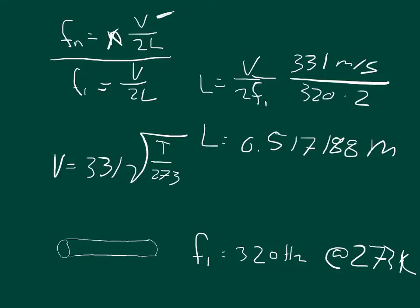So our new velocity should equal 348.7129 meters per second, and we can just plug that in up here on our fundamental frequency equation for an open pipe.